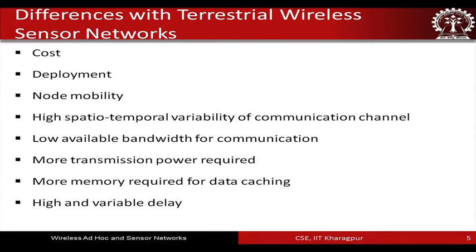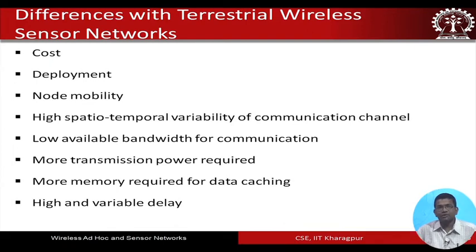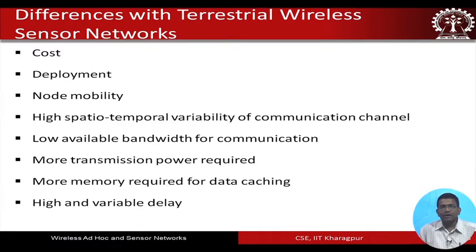In terrestrial sensor networks, physical phenomena like wind moving nodes from one point to another are not really common. But in underwater environments, mobility of nodes due to underwater currents, waves, etc. is a very common phenomenon. So node mobility is very different in underwater sensor networks. Additionally, there is high spatiotemporal variability of underwater channels — with time and space there is high variability compared to the terrestrial environment.